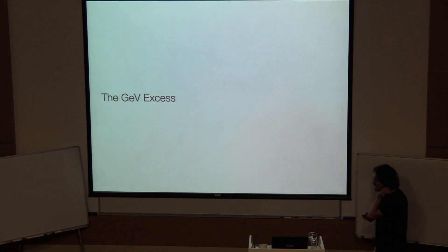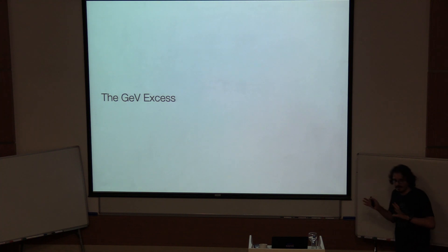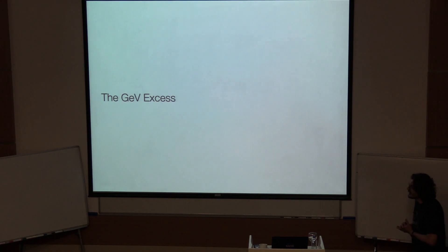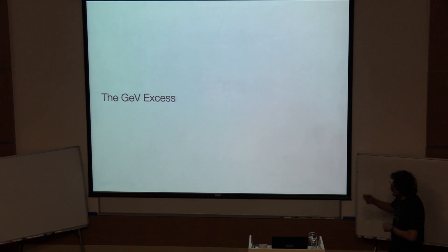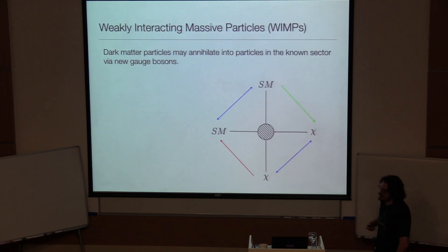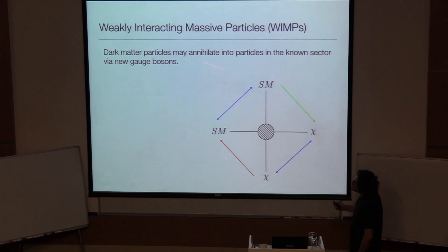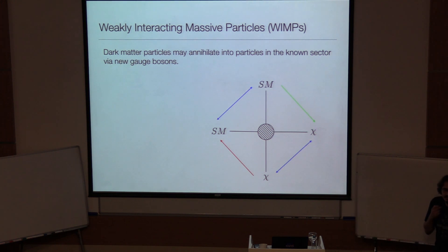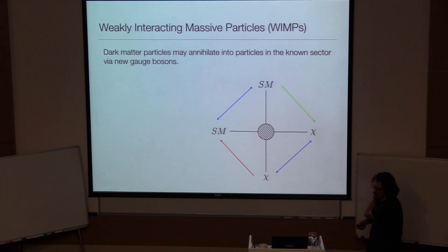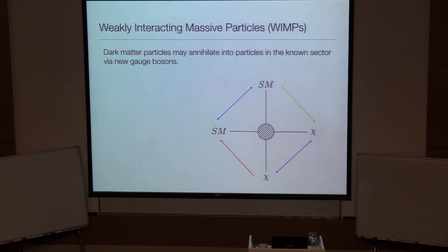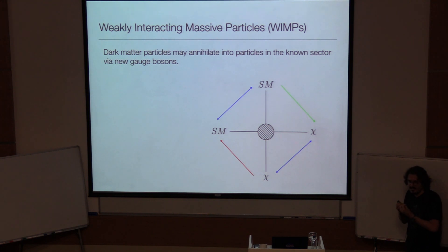Now I'll switch gears to the GCE. So far I've talked about the dark matter problem and structure formation. In the remaining time I'll mention one project I worked on including Tracy and my PhD advisor, about a possible signal associated with dark matter. One of the candidates for dark matter is called a weakly interacting massive particle — WIMP. Dark matter WIMPs can self-annihilate: interact with each other and produce standard model particles.